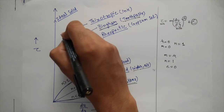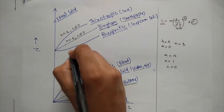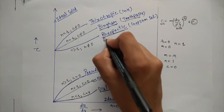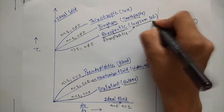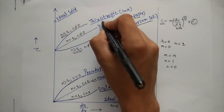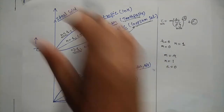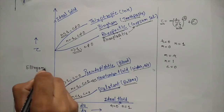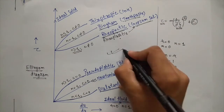If n is greater than 1 with c not equal to 0, such fluid is rheopectic, sometimes also referred to as rheoplastic — an example is gypsum solution. When n is less than 1 with c not equal to 0, it is thixotropic. This complete diagram showing all fluid types is known as the lingam diagram, which is very important from an examination point of view.